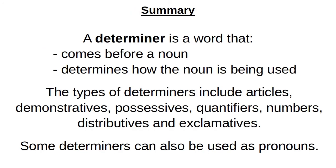To conclude and sum up: a determiner is a word that comes before a noun, and its function is to determine how the noun is being used. There are several types of determiners, including articles, demonstratives, possessives, quantifiers, numbers, distributives, and exclamatives. Some determiners can also be used as pronouns.